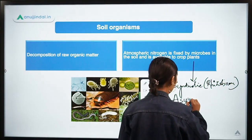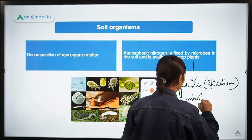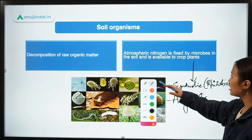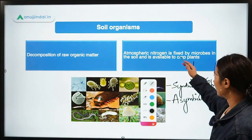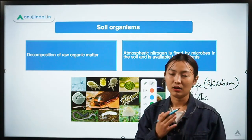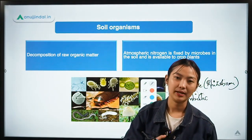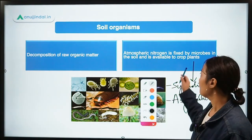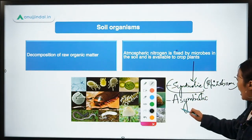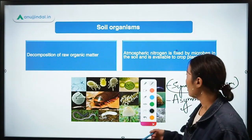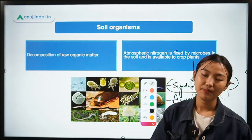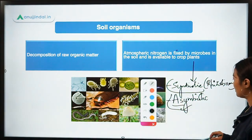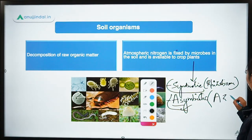This topic will be discussed in full detail in another chapter. For now, understand that these soil organisms help fix atmospheric nitrogen. Normally, atmospheric nitrogen is not available for plants to absorb from the soil. What these microbes do is fix this nitrogen through symbiotic and asymbiotic processes, making the unavailable nitrogen available for plants to absorb.